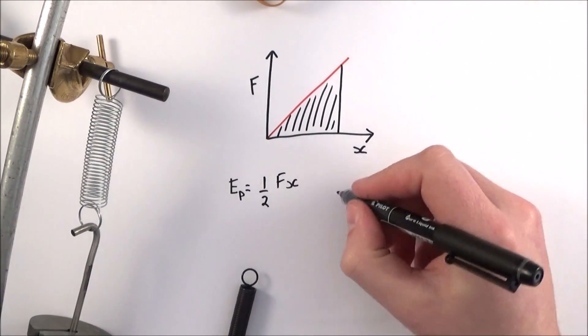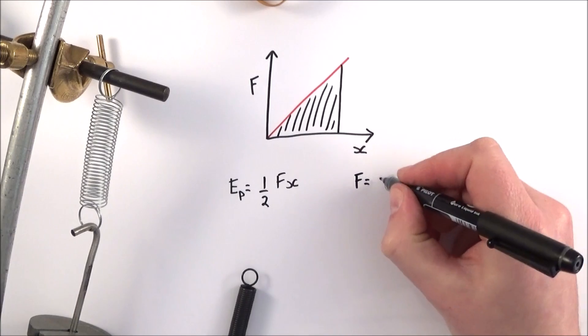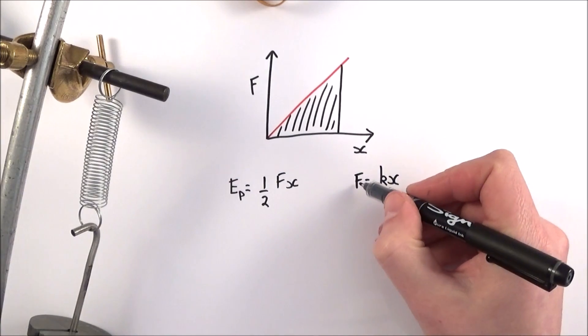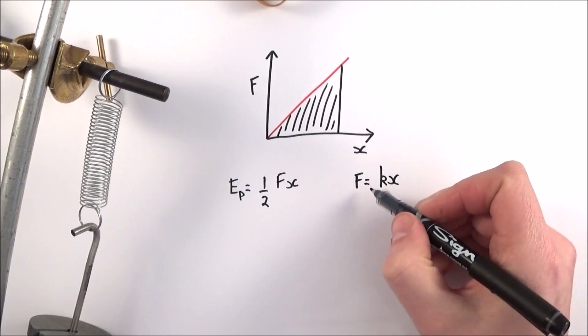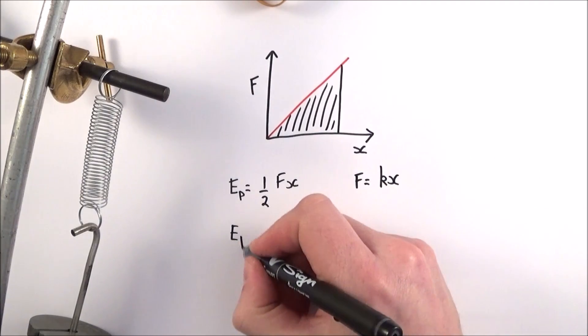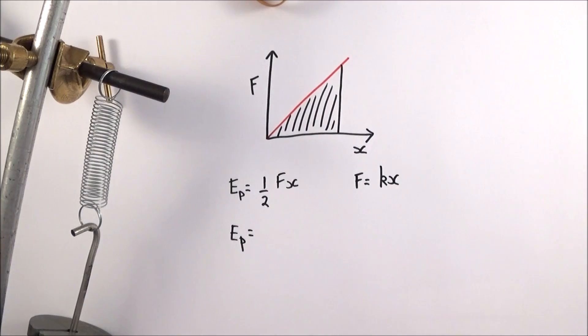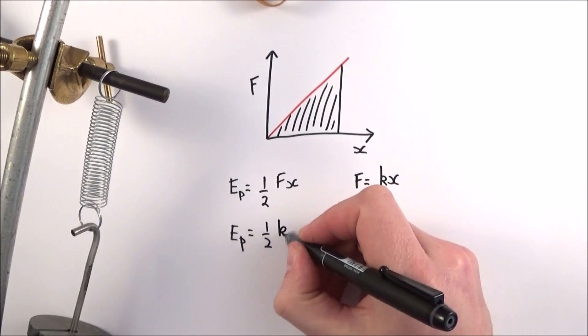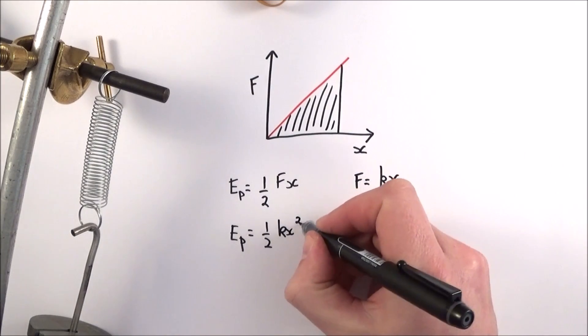But we also saw in the last video that the force is equal to kx. And what we can do is basically substitute the force here with this value here. So we can also say that the elastic potential energy stored by a spring or another object which is maybe compressed or in tension is equal to a half times f, which equals kx, multiplied by x, so kx squared.